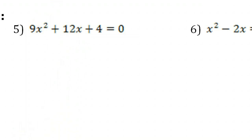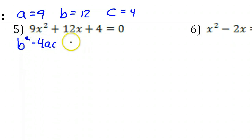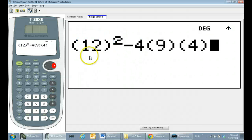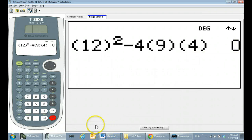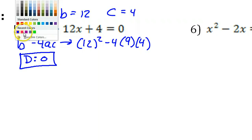I'm just going to have to believe that you did that. The first step is to find the discriminant. In this problem, A is 9, B is 12, and C is 4. I would always find the discriminant first — B squared minus 4AC. So that's going to give us 12 squared minus 4 times 9 times 4, and that gives us 0. The discriminant is 0, which means we will have one real solution.